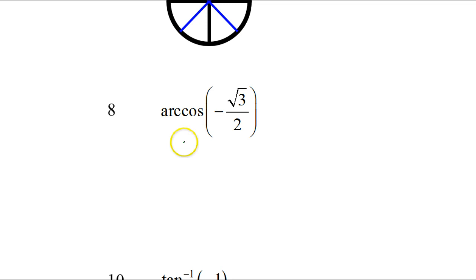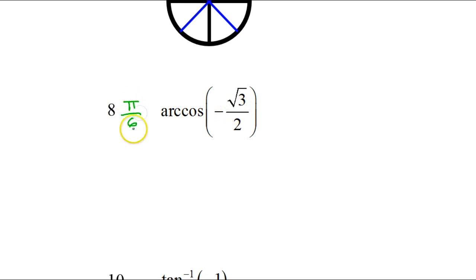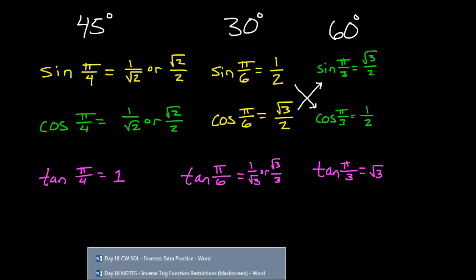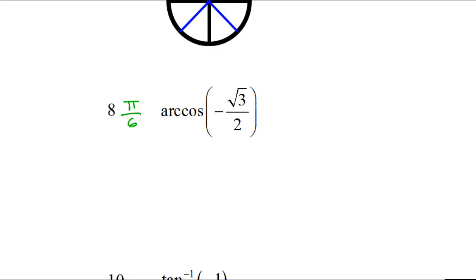Arc cosine is just an angle — it's the angle whose cosine is negative radical 3 over 2. Forget the negative for a second. The cosine of what angle is radical 3 over 2? Hopefully you have memorized that that is pi over 6. The cosine of pi over 6 is radical 3 over 2. Because of the negative, this is not the answer — pi over 6 is just the reference angle. Let's look at the unit circle.